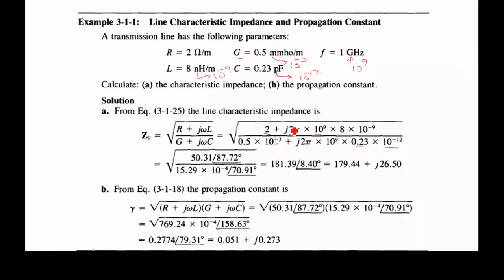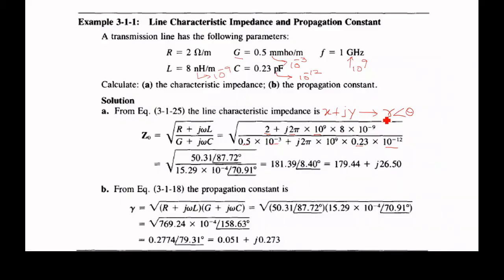This is in rectangular form. Both numerator and denominator are in rectangular form, so here it was converted into polar form. In the calculator, we can convert rectangular form x plus jy into polar form r at an angle of theta. By using the calculator, you can do rectangular to polar conversion, and here this rectangular form is converted.